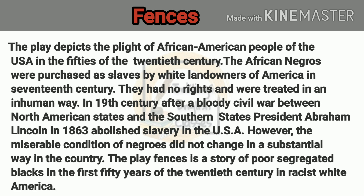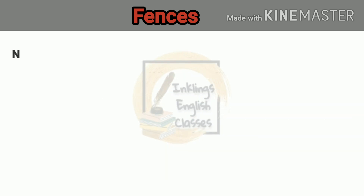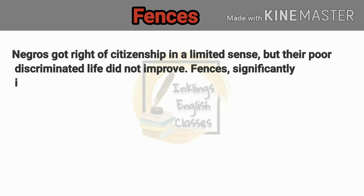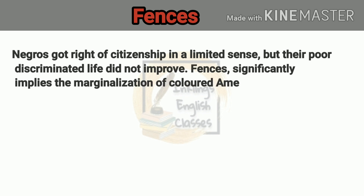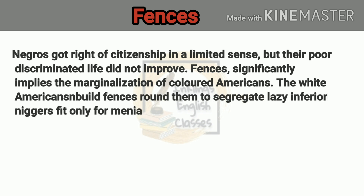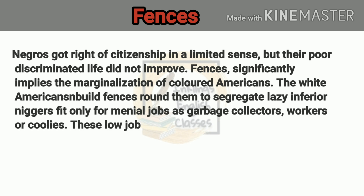उनके पास कोई अधिकार नहीं होते थे, इसके अलावा उनके साथ अमानवीय व्यवहार किया जाता था। लेकिन 19वीं century में Civil War खत्म होने के बाद American President Abraham Lincoln ने 1863 में Slavery यानि कि गुलाम प्रथा को खत्म कर दिया था। Negroes को citizenship का अधिकार तो मिल गया था, मगर उनके साथ जीवन के हर एक स्तर पर भेदभाव किया जाता था। Fences के द्वारा Wilson ने Colored Americans के Marginalization को बहुत अच्छे से दिखाने की कोशिश की है।